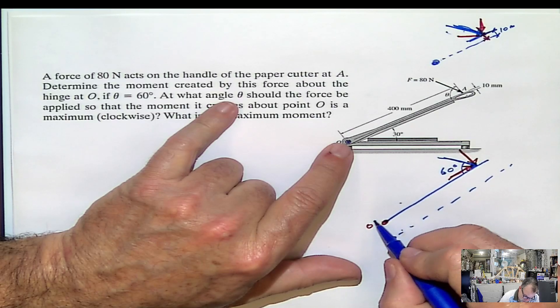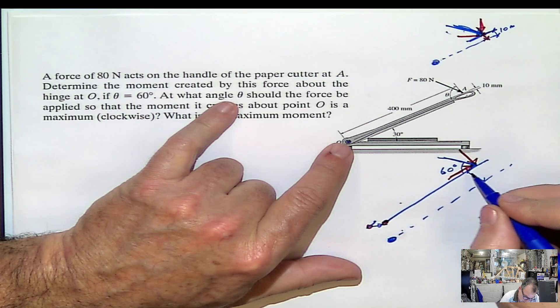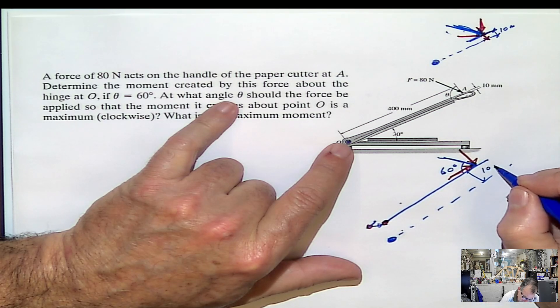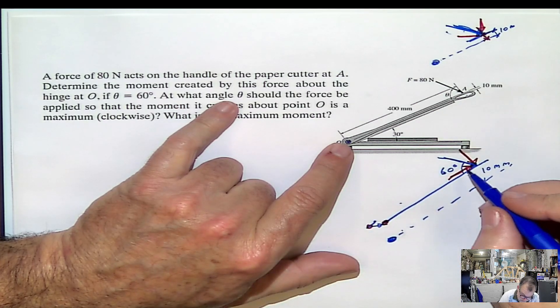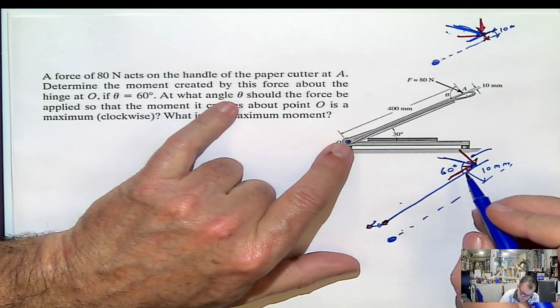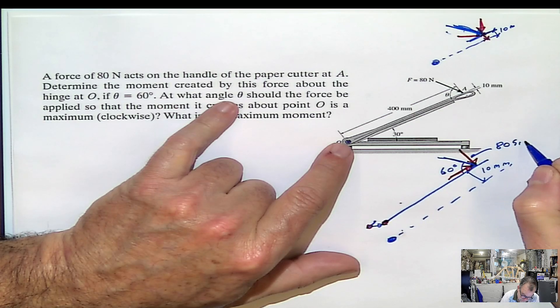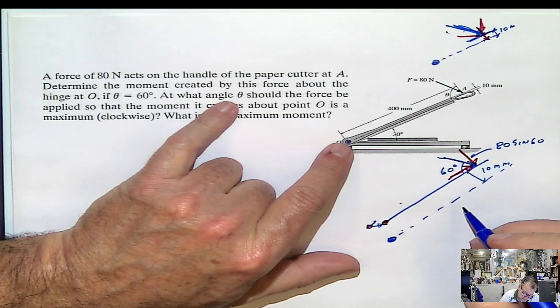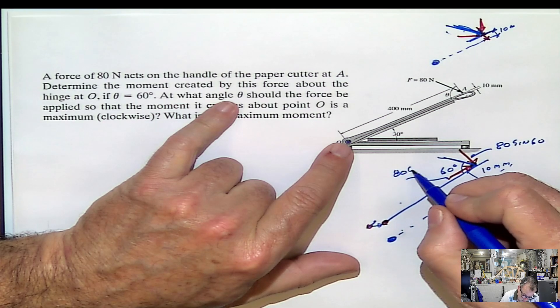I'm sorry, the point O is here, not there. And this distance is going to be 10 millimeters, meaning this component will be 80 multiplied by sine 60. And this component will be 80 cosine 60.